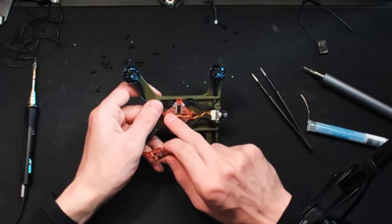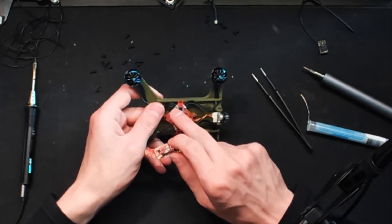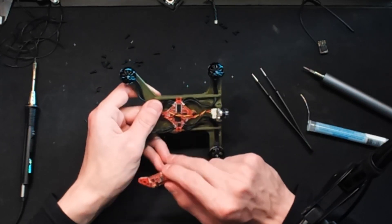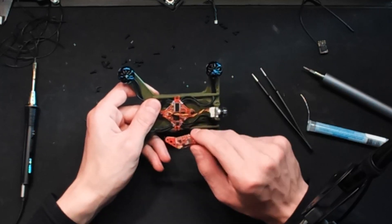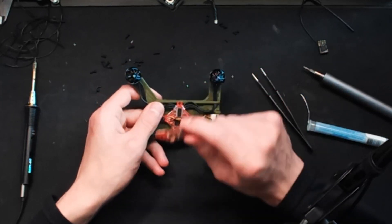But if your flight controller doesn't have a facility for the camera and the video transmitter and only has like a video out pad or something like that, then you'll want to wire the camera directly to the transmitter.